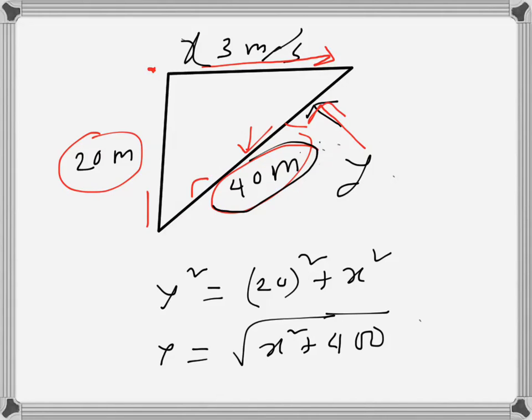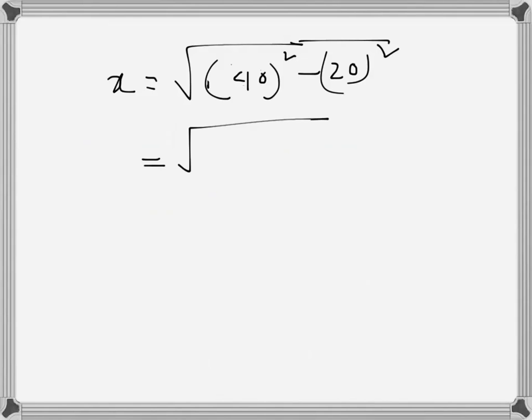We can find the value of x using Pythagorean theorem. When the string length is 40 meters, x² = 40² - 20² = 1600 - 400 = 1200, so this becomes x = 34.64 meters approximately.